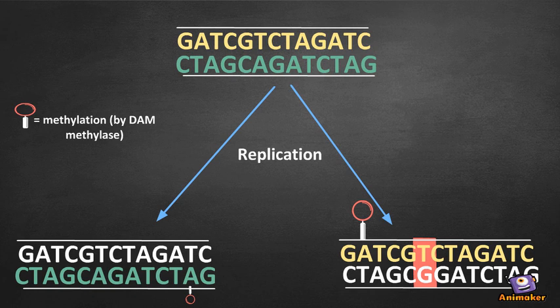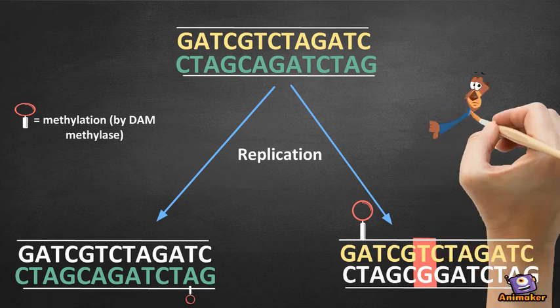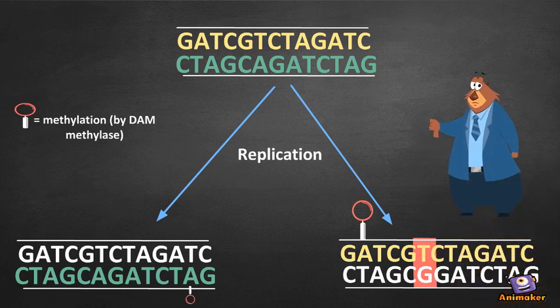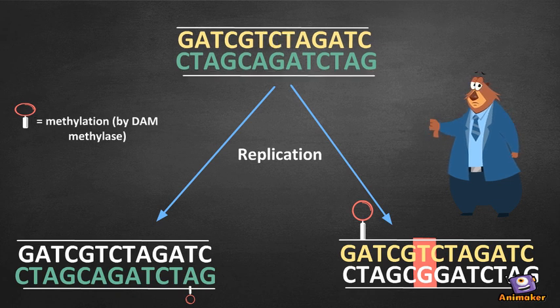Misincorporation occurs when DNA polymerase incorrectly base pairs two nucleotides. This can occur due to the presence of base analogs. However, DNA replication is semi-conservative and the cell can differentiate the parent strand and the new mutated strand.